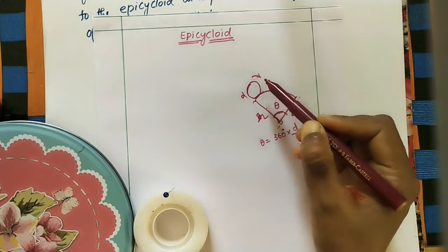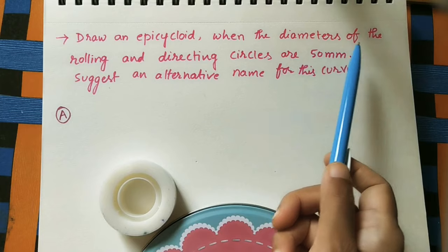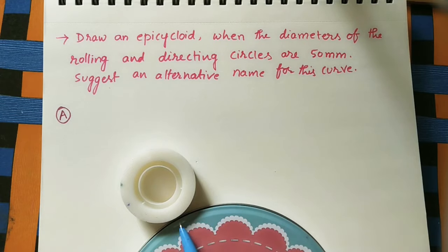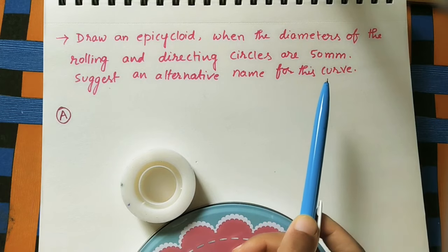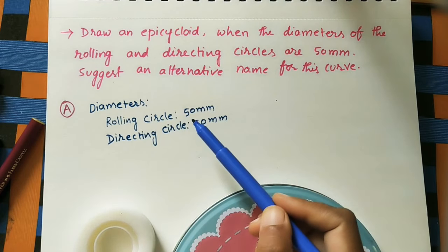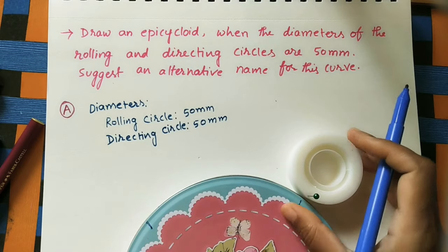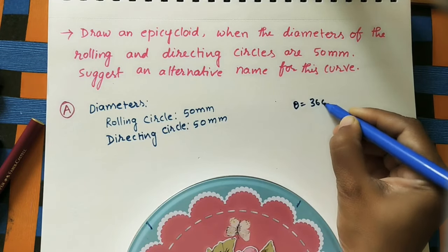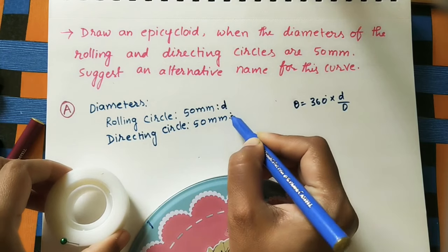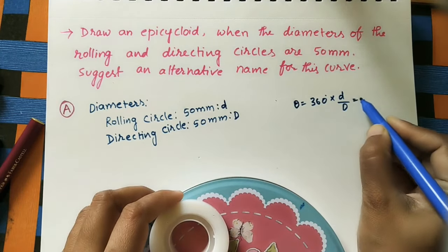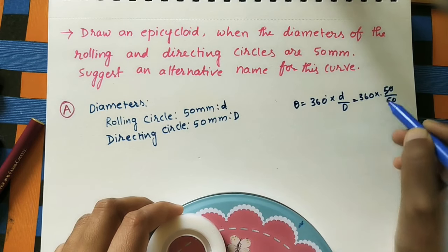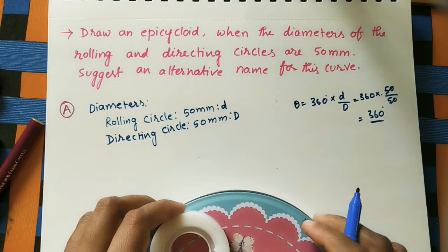The small circle makes one complete rotation on the directing circle. The problem: draw an epicycloid when the diameter of the rolling and directing circles are both 50 mm. Since both diameters are same, we substitute into the formula: theta equals 360 degrees multiplied by 50 divided by 50. The 50s cancel, giving 360 degrees — meaning one complete circle.